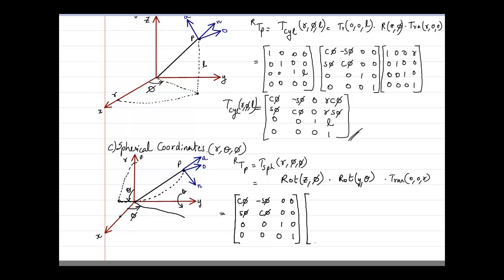Next, rotation with respect to the Y axis by angle theta. The matrix will be: cos theta, 0, sin theta, 0 in the first row; 0, 1, 0, 0 in the second row; minus sin theta, 0, cos theta, 0 in the third row; with a scaling factor of 0. There is no translation in any direction because it is rotation with respect to Y, so that ends the matrix there.